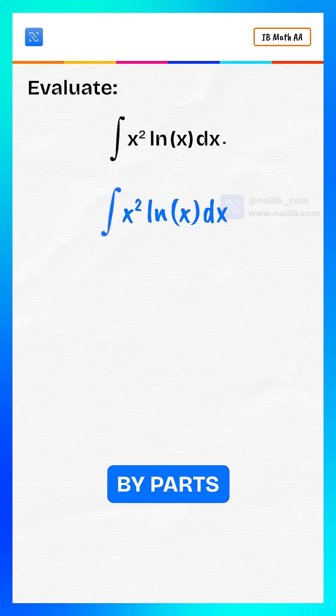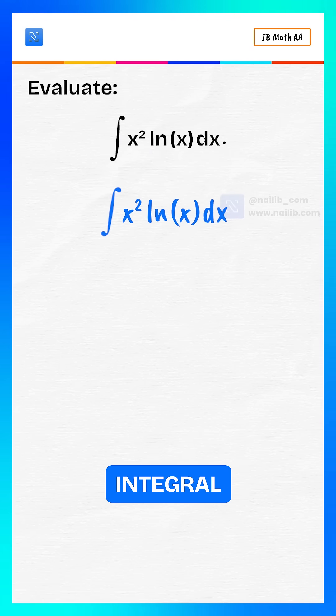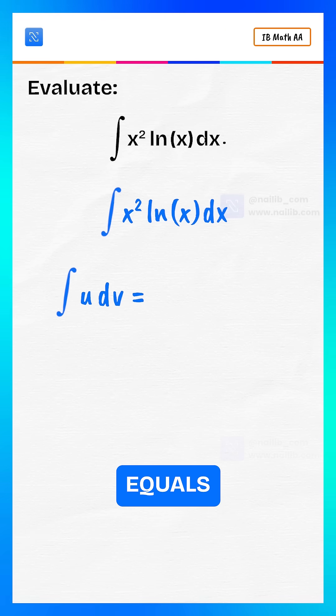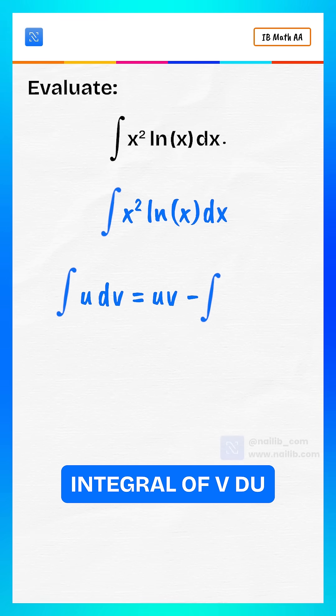Use integration by parts. We use the formula: integral of udv equals uv minus integral of vdu.